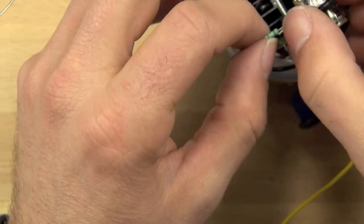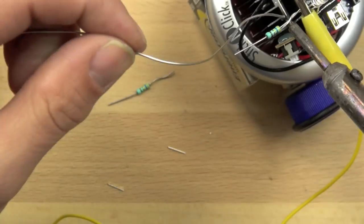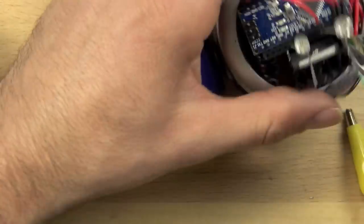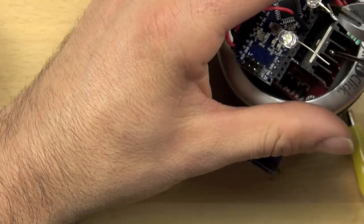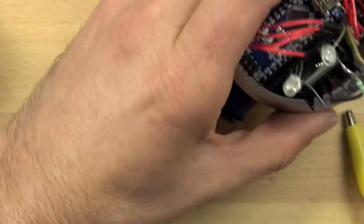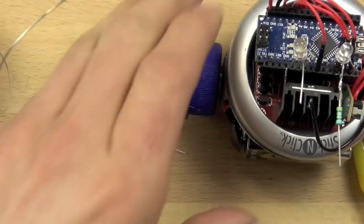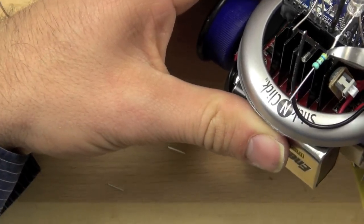Okay. So the alligator clip does two things. It holds the resistor in place, but it also allows us to absorb some heat so that we don't damage our LED. So now I'm just trimming off some of the excess there and we'll do the same for the other side of the resistor and the LED.